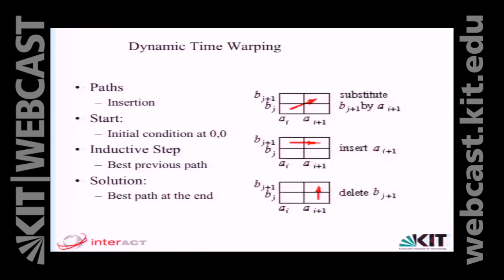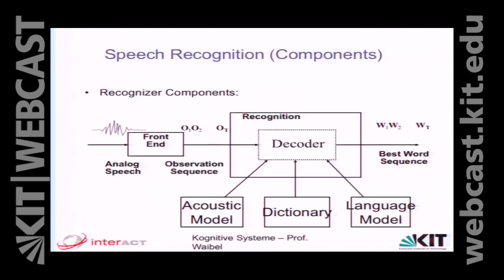Daher möchte ich auf den Hidden-Markov-Modell-Ansatz eingehen, der eigentlich alle diese Methoden kombiniert. In einem Spracherkenner, so wie er heute noch in verschiedenen Formen zum Einsatz kommt, haben wir ein Frontend, das uns Beobachtungsvektoren produziert, und wir haben einen Decoder, der versucht herauszufinden, welches die beste Wortsequenz ist. Der Decoder sucht durch alle möglichen Hypothesen und ordnet denen eine Wahrscheinlichkeit zu. Mit dieser Wahrscheinlichkeit bilden wir den ArgMax. Teil dieser Suche wird implementiert durch ein akustisches Modell, ein Lexikon und ein Language Model.